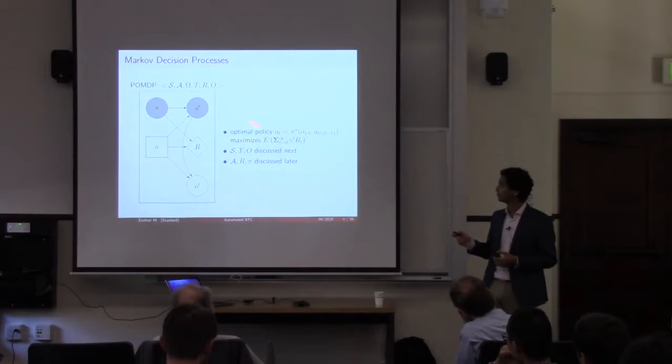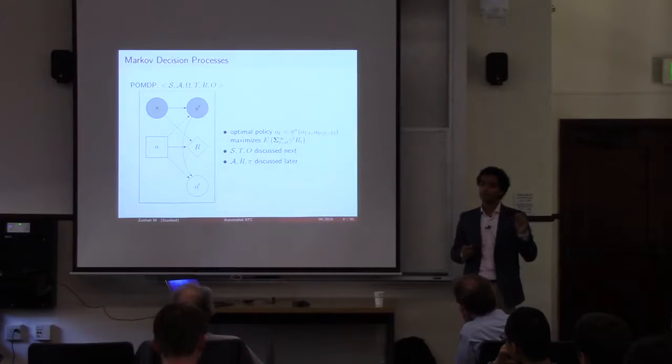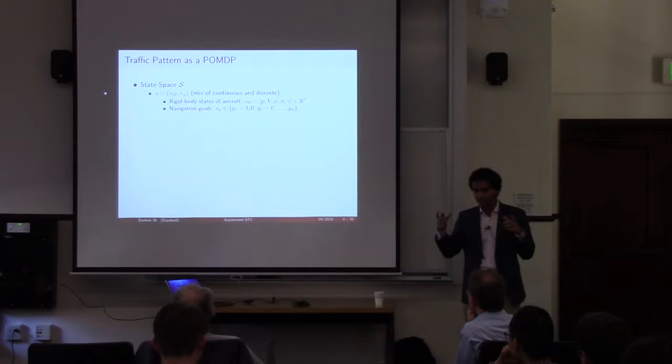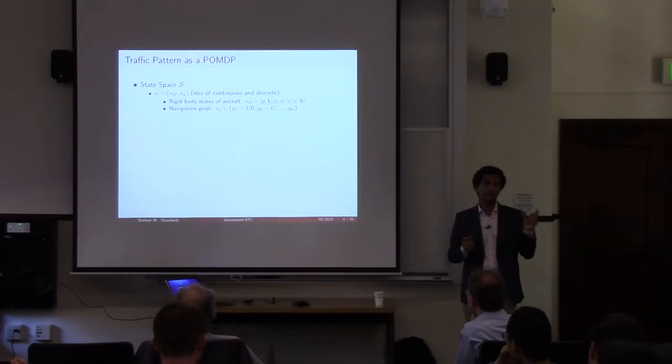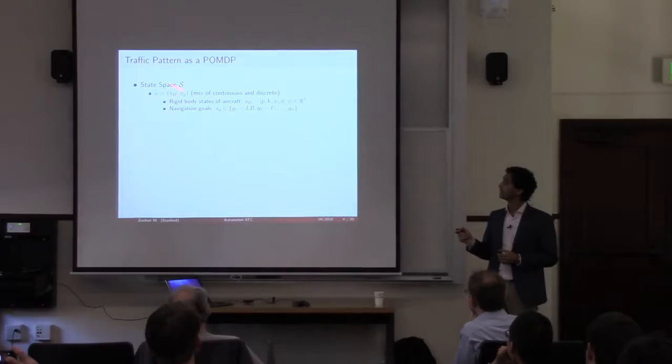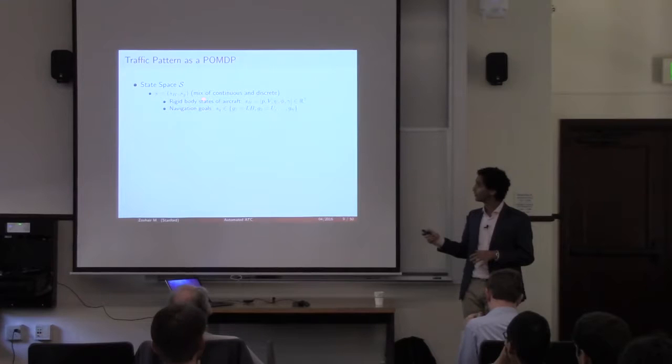Over the next few slides I'll discuss the state transitions and observations for my problem. The state space takes a hybrid view with a mix of continuous and discrete states. The continuous states are the rigid body of the aircraft — I'm using only a subset since we don't need full flight dynamics details, just a big-picture view of where the aircraft is. The second part of the state is the navigation goals of the pilot, which are discrete — for example, left base, outpoint, etc.